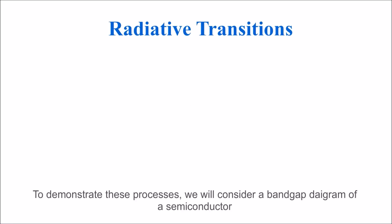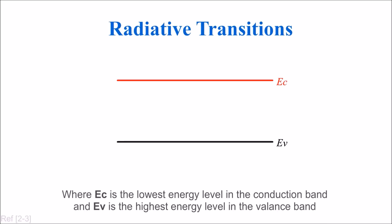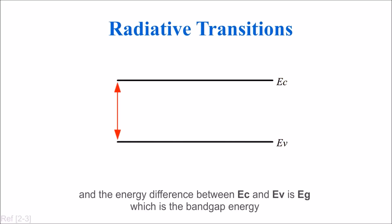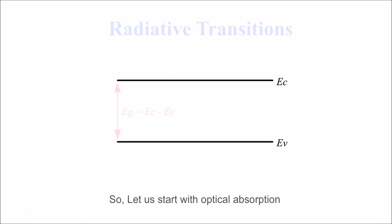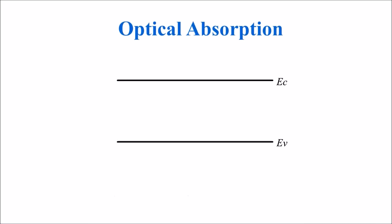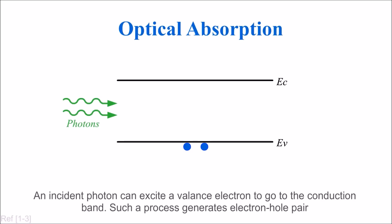To demonstrate these processes, we will consider a bandgap diagram of a semiconductor where Ec is the lowest energy level in the conduction band, and Ev is the highest energy level in the valence band. The energy difference between Ec and Ev is Eg, which is the bandgap energy.